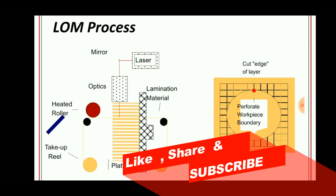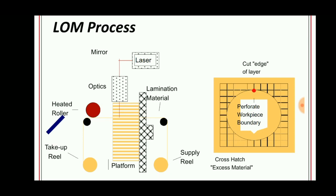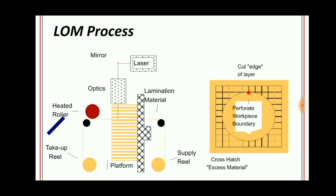In this process, the sheet to be laminated is placed in the pulleys. A supply reel feeds the laminated material over the sheet, and the take-up reel takes it. A laser is used as a source to heat the laminated material and fix it over the sheet. A mirror is used to target the laser action onto the laminated material, and a heated roller is rolled over this laminated material to fix it correctly.